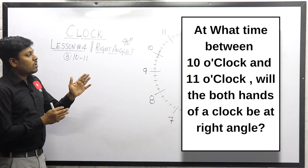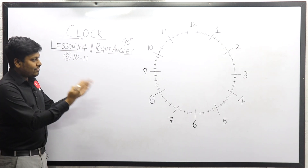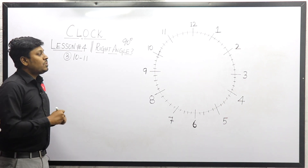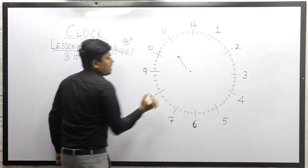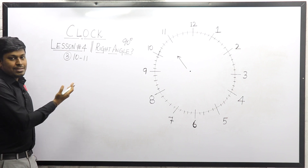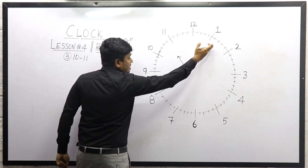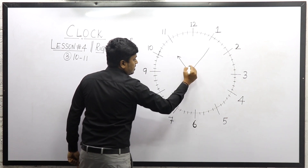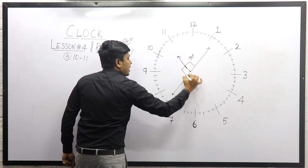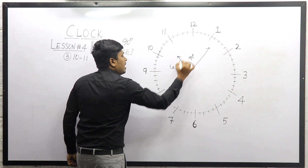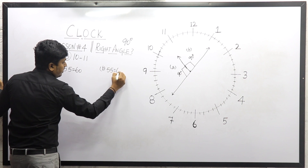Question number three: at what time between 10 o'clock and 11 o'clock will the hands of the clock be at right angle? Step one: draw the hour hand pointing somewhere between 10 and 11. Step two: draw a perpendicular line representing the minute hand. One possible has 90 degrees on one side, the other possible has 90 degrees on the other side. We get two possibles. 55 minute spaces are gained in 60 minutes for both possibles.